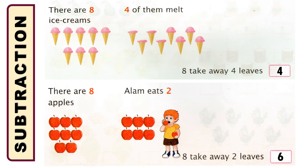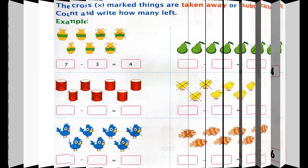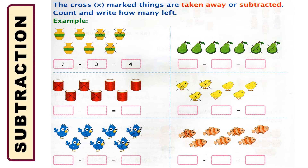This is all about subtraction. Now we will go to more examples to do the math. The cross-marked things are taken away or subtracted — count and write how many are left. The first example is given: there are seven jars and among them three were cross-marked. Counting the remaining: one, two, three, four — four jars were left. That means seven subtraction three is equal to four.